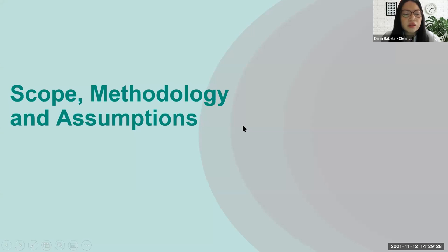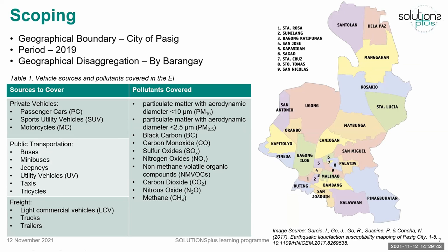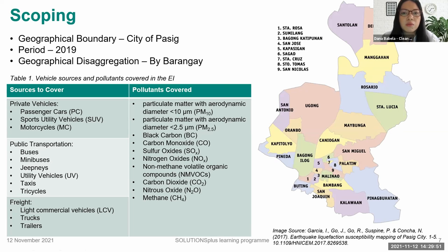For the scope, methodology, and assumptions, scoping helps identify the coverage of the EI. The geographical boundary is limited to the area of PASIC city. The period or base year used for this EI is 2019, since it was the latest year pre-pandemic. This will help determine baseline emission values during what we may call normal conditions, to avoid underestimation of emissions levels.